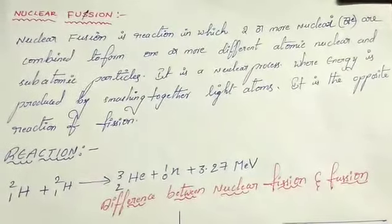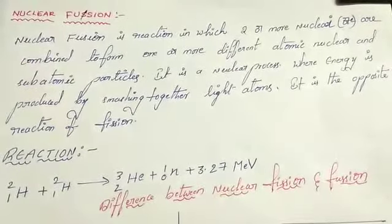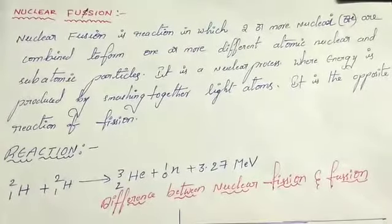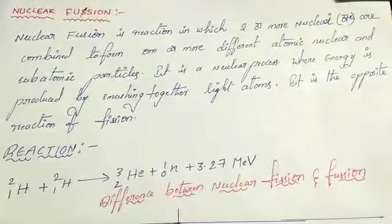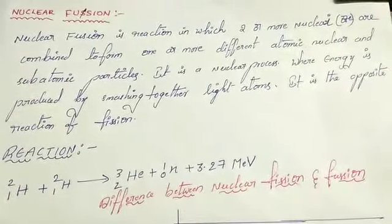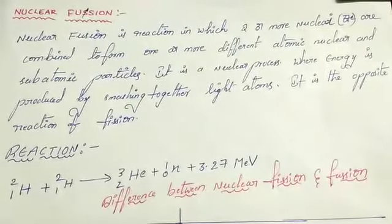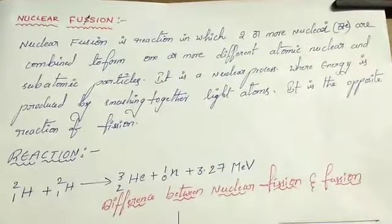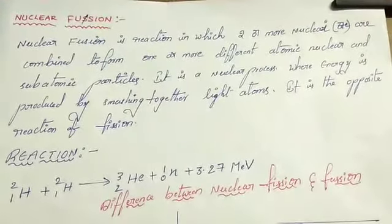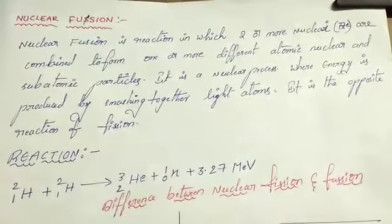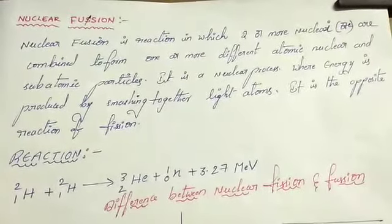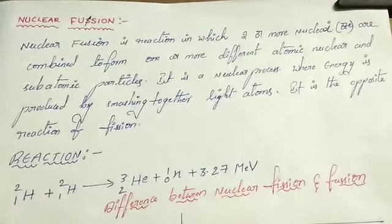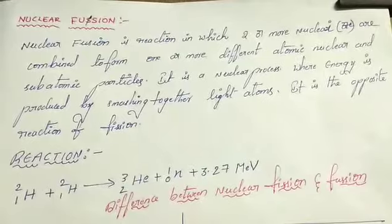But here we have one problem. When the hydrogen atoms come together, there is a large amount of electrostatic repulsion between the two hydrogen atoms. The temperature required is approximately 10 to the power of 6 Kelvin, which could not be achieved or controlled by man on the earth.